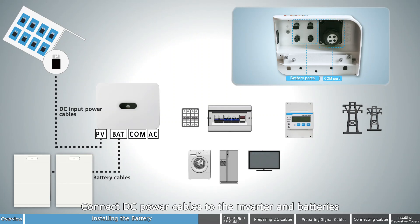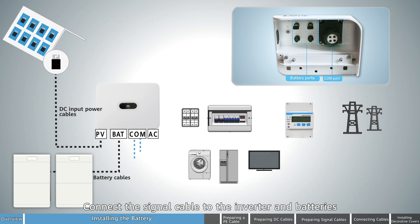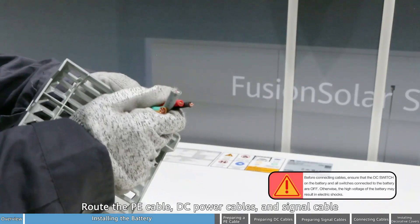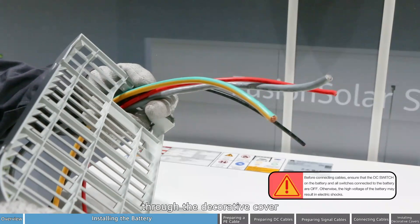Connect DC power cables to the inverter and batteries. Connect the signal cable to the inverter and batteries. Route the PE cable, DC power cables, and signal cable through the decorative cover.